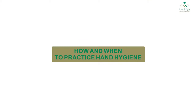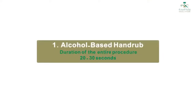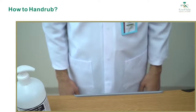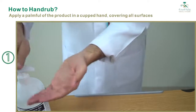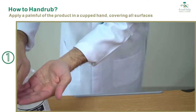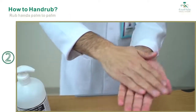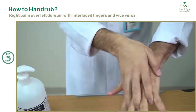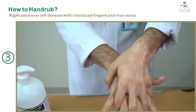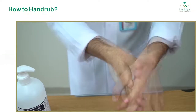How and When to Practice Hand Hygiene. Alcohol-Based Hand Rub: duration of the entire procedure, 20 to 30 seconds. Wash hands instead when visibly soiled. How to Hand Rub: 1. Apply a palmful of the product in a cupped hand, covering all surfaces. 2. Rub hands palm to palm. 3. Right palm over left dorsum with interlaced fingers and vice versa. 4. Palm to palm with fingers interlaced.